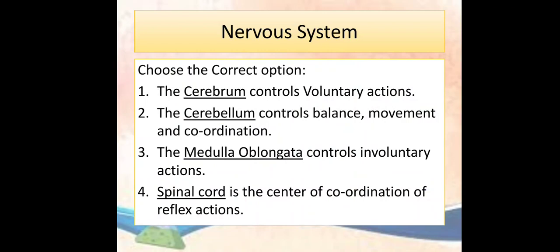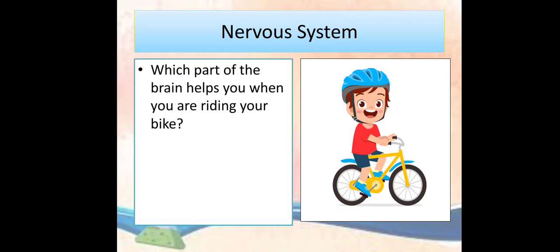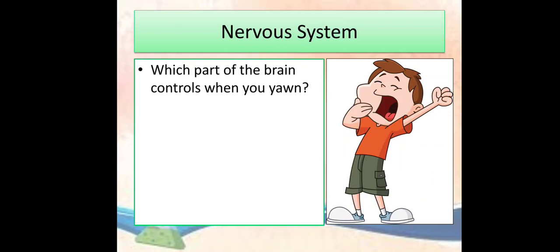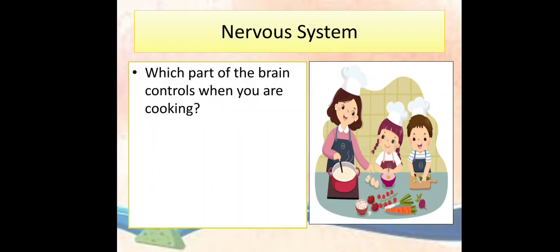Answers: Which part of the brain helps you when you are riding your bike? Answer is cerebellum. Which part of the brain controls when you yawn? Answer is medulla oblongata. Which part of the brain controls when you are cooking? Answer is cerebellum.